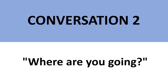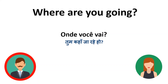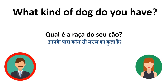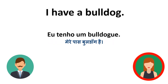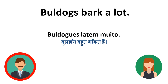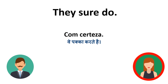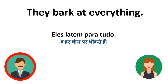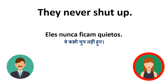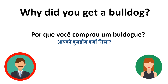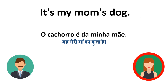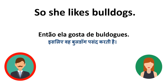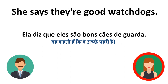Conversation 2: Where are you going? I have to walk the dog. What kind of dog do you have? I have a bulldog. Bulldogs bark a lot. They sure do. They bark at everything. They never shut up. Why did you get a bulldog? It's my mom's dog. So she likes bulldogs. She says they're good watchdogs.